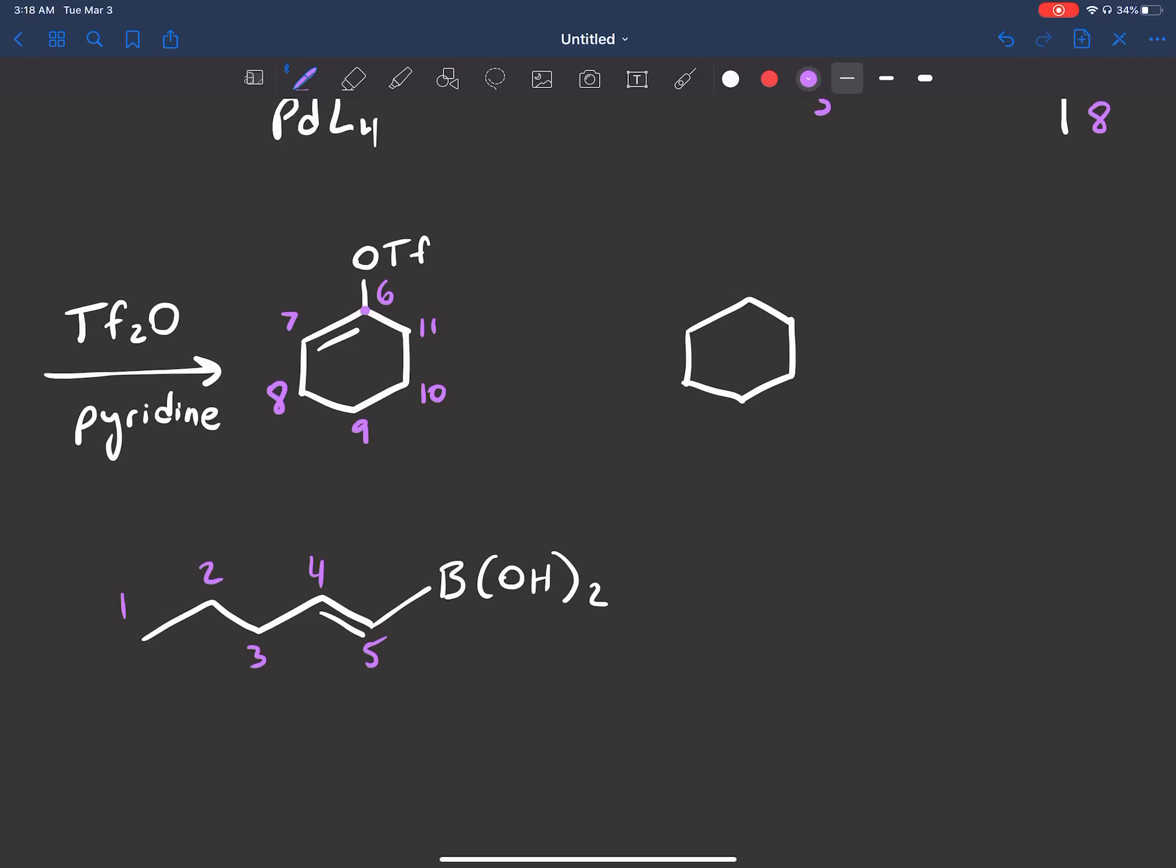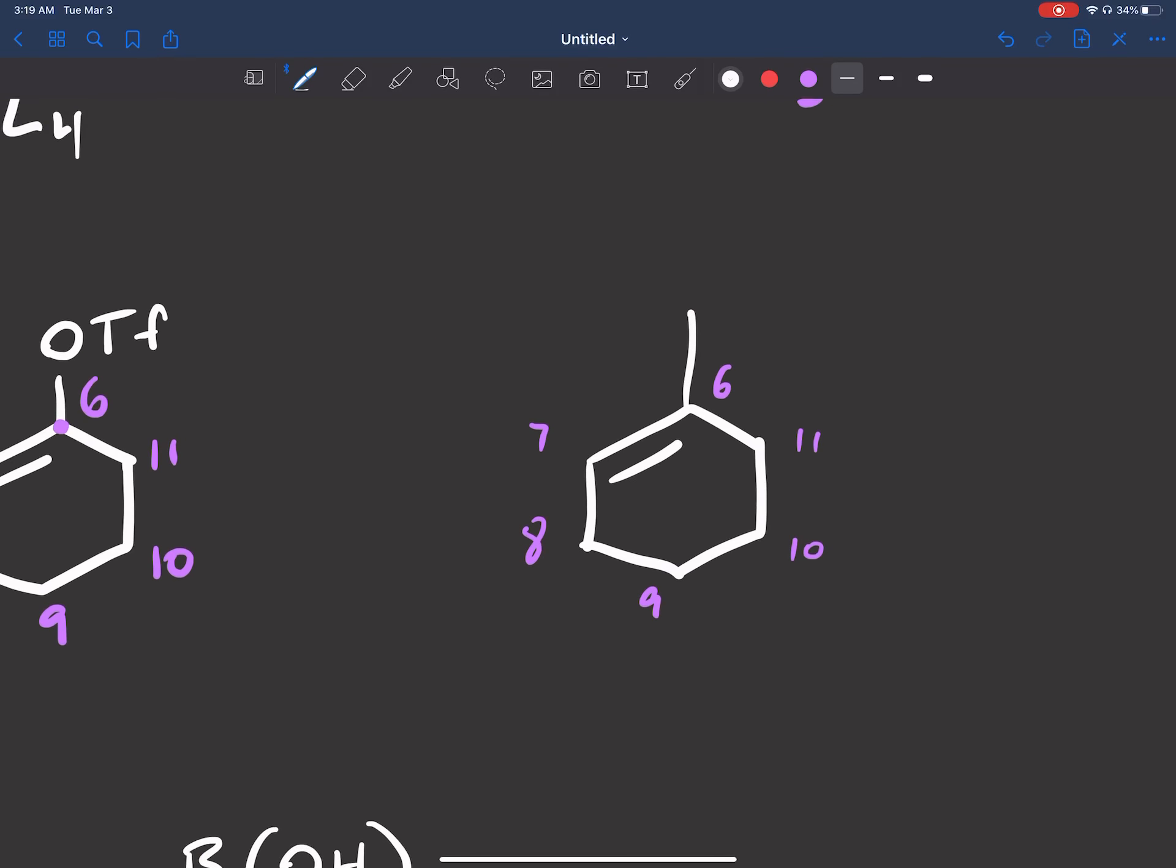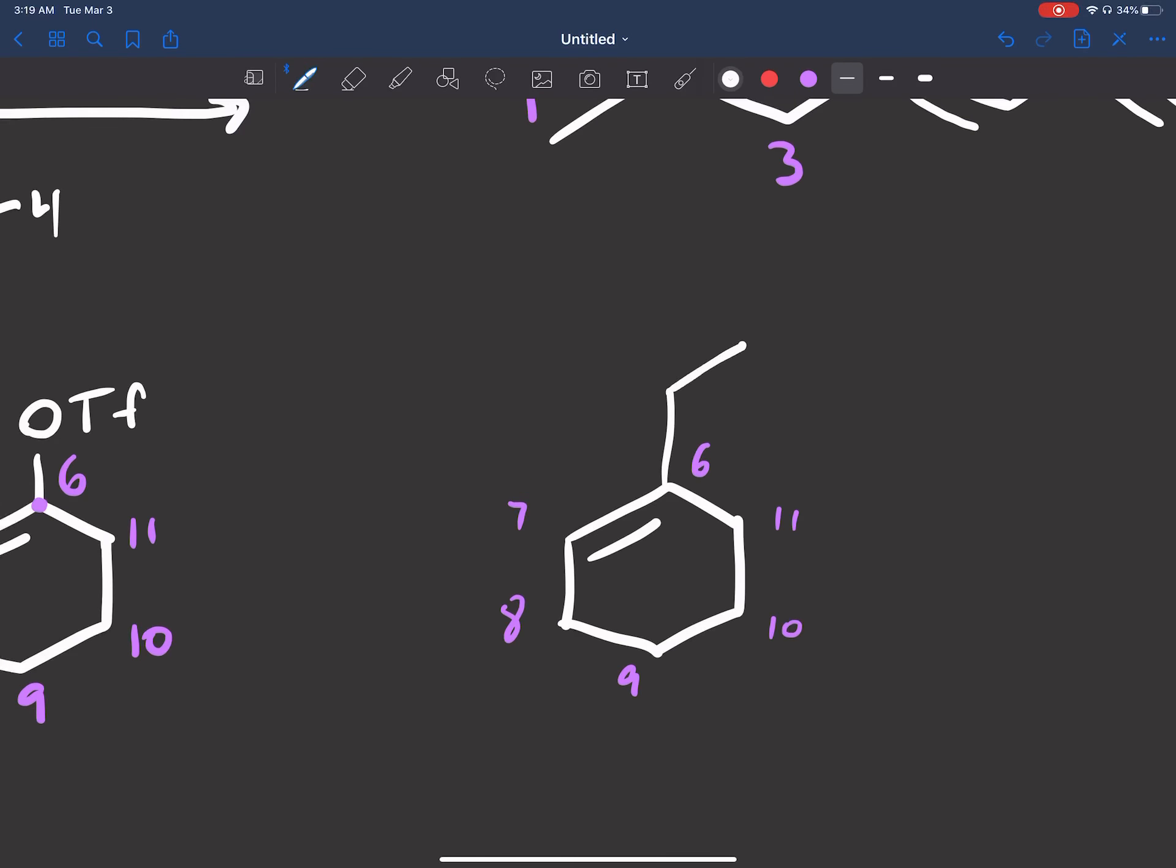So if I number my carbons again: 6, 7, 8, 9, 10, 11. We're going to bind 5 to 6. 6-7 had that double bond still. And if you look at that 4-5 double bond, it's trans, so you have to make him trans. Let's just count our carbons: 5, 4, 3, 2, one extra carbon left.